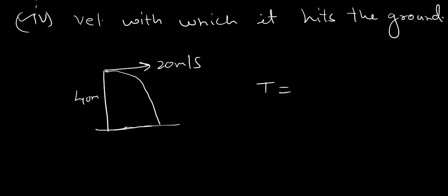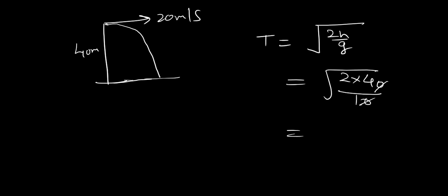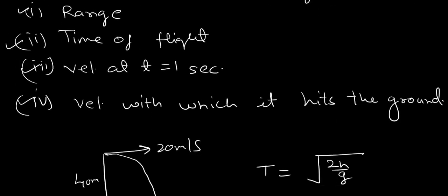So, first of all, take time of flight and take a simple formula, root 2H by G. So, let's substitute the value here, 2H is 40 upon G is 10, so it will be 2 root 2 second. So, this is the answer to the second part of the question.